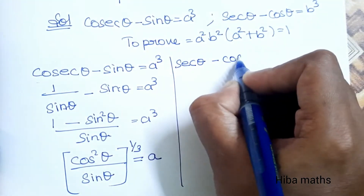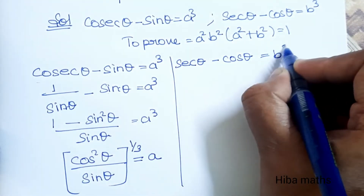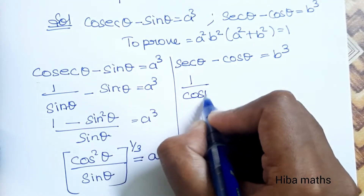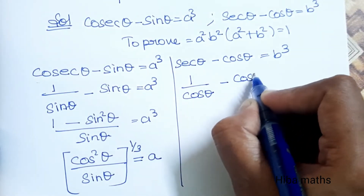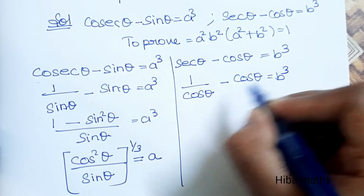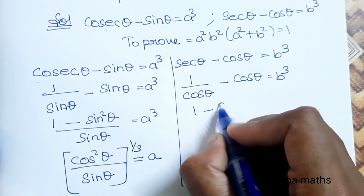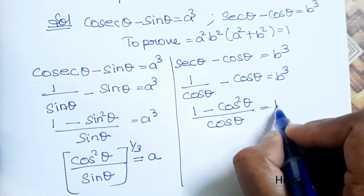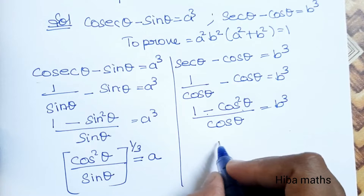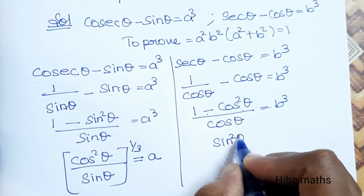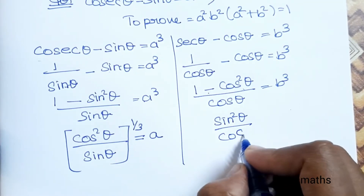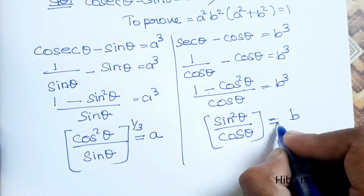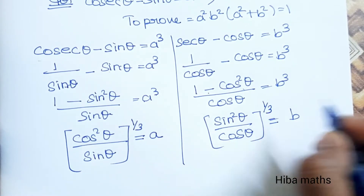Similarly, secant theta minus cos theta is equal to b cube. Secant theta equals 1 by cos theta, so: 1 by cos theta minus cos theta is equal to b cube. After cross multiplying: 1 minus cos square theta divided by cos theta is equal to b cube. So sin square theta divided by cos theta is equal to b cube, and raising to power 1 by 3 gives b.